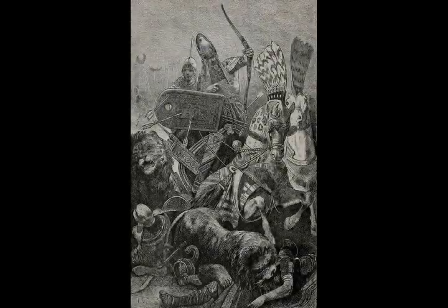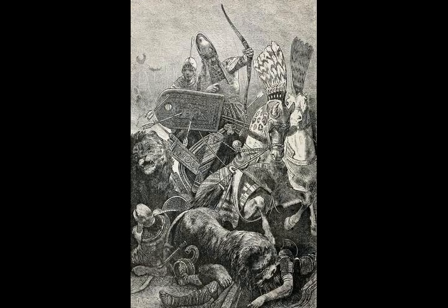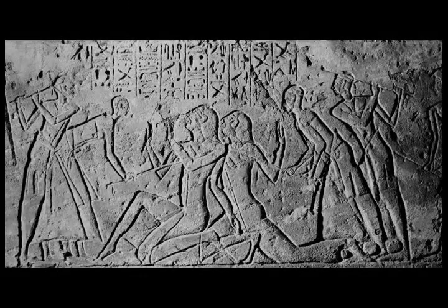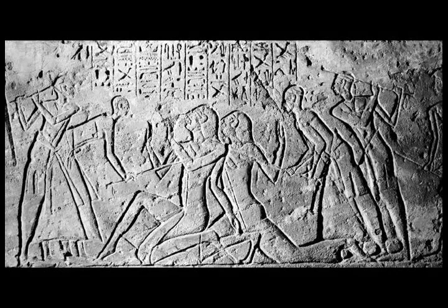The treaty was inscribed on a silver tablet, of which a clay copy survived in the Hittite capital of Hattusa, now in Turkey, and is on display at the Istanbul Archaeology Museum. An enlarged replica of the agreement hangs on a wall at the headquarters of the United Nations, as the earliest international peace treaty known to historians. An Egyptian version survives on a papyrus.